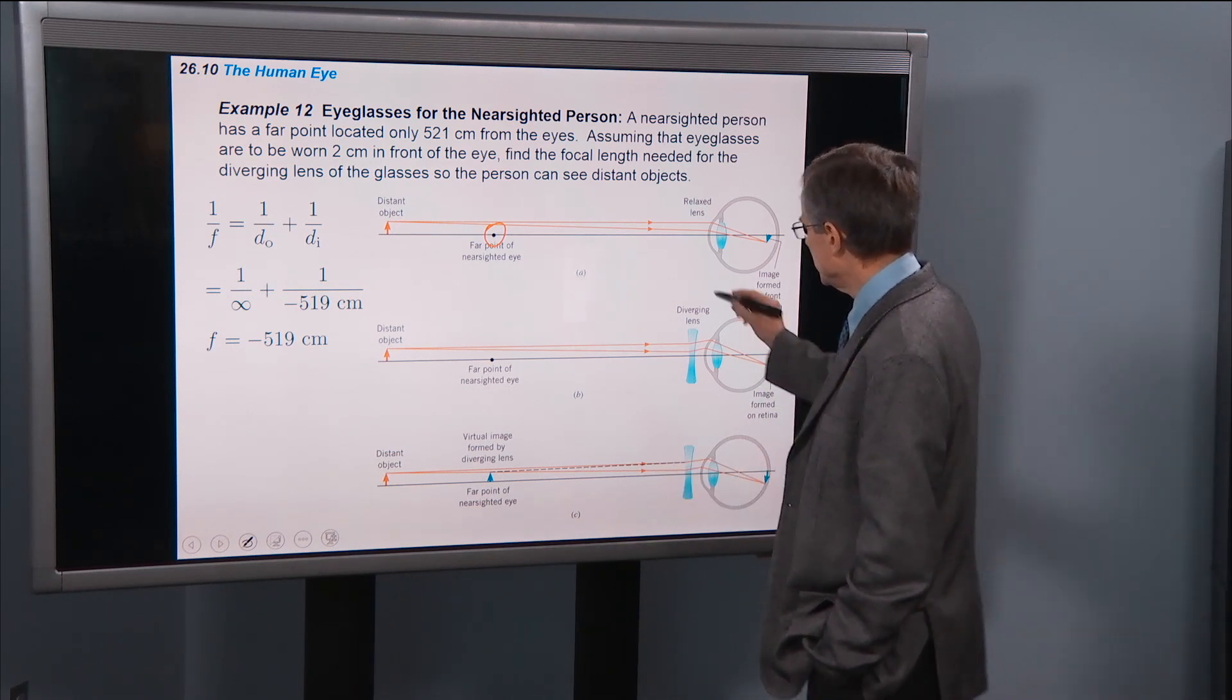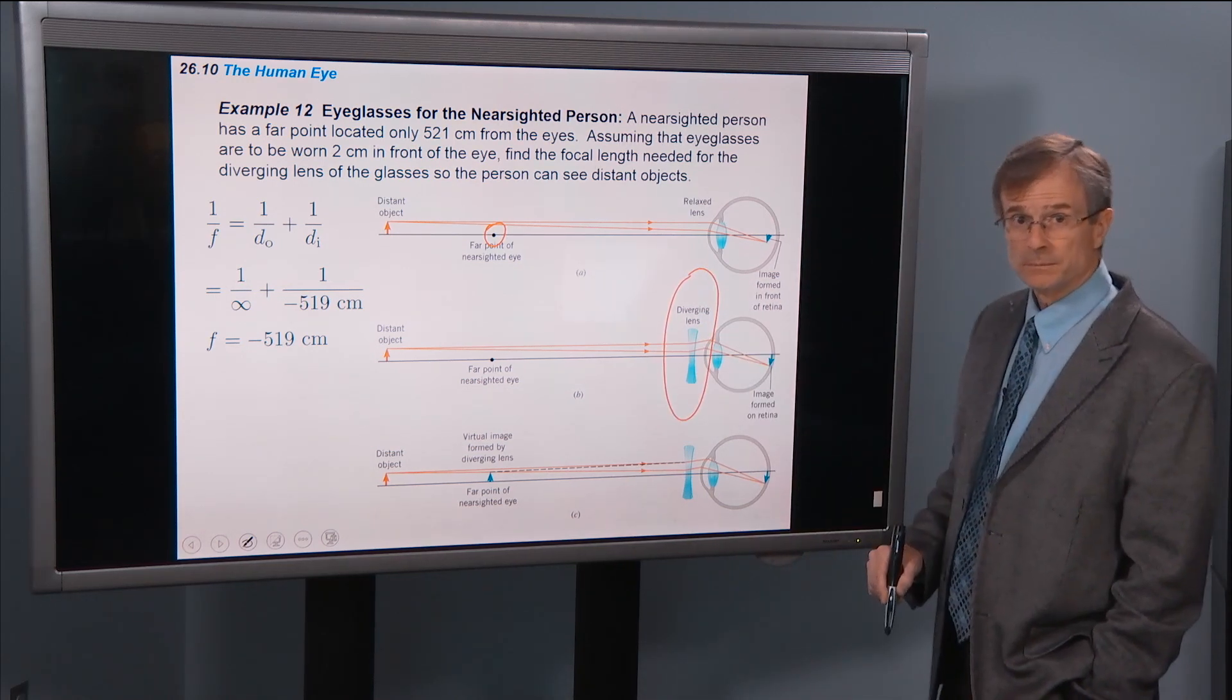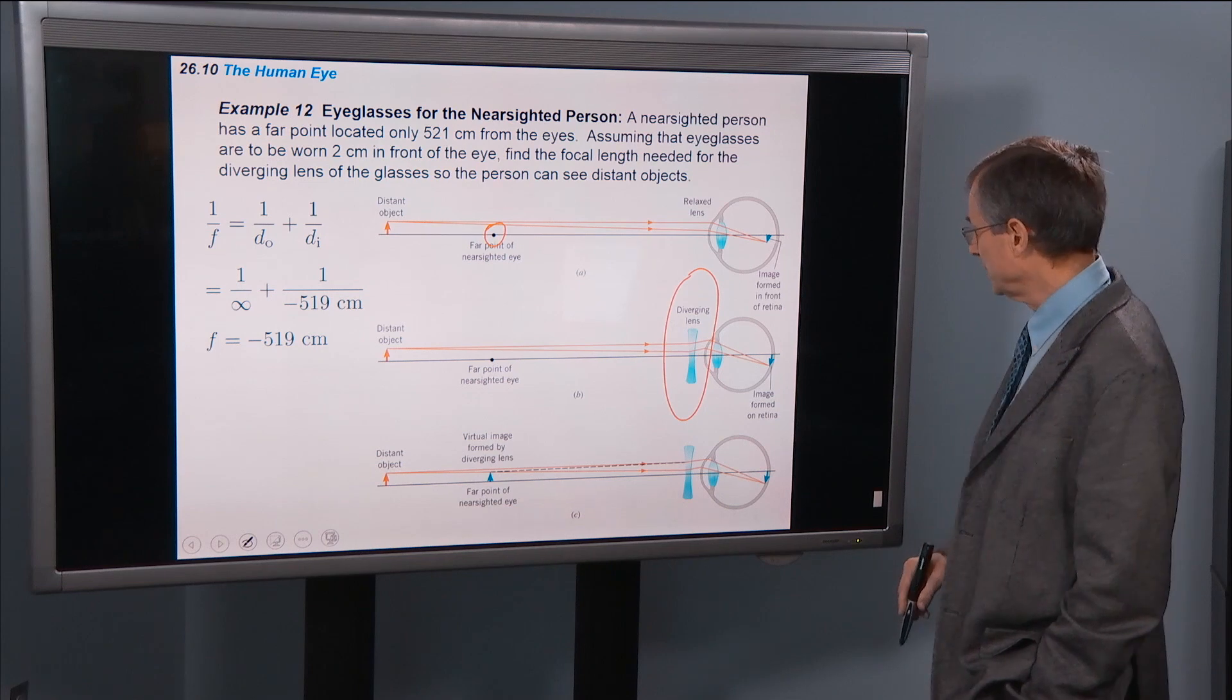And so what you do is to give that person a diverging glasses, a diverging lens. And assuming that eyeglasses are to be worn 2 centimeters in front of the eye, so this is 2 centimeters.